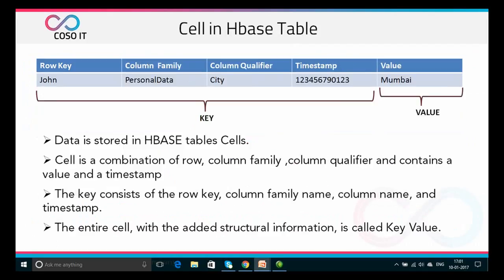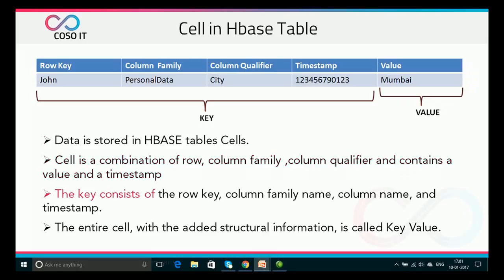A cell in HBase typically has a row key, column family, column qualifier, timestamp, and value. Data is stored in HBase tables as cells, where a cell is a combination of row, column family, and column qualifier, and contains a value and a timestamp. The key consists of row key, column family name, column name, and the timestamp. The entire cell with its structural information is called a key-value.